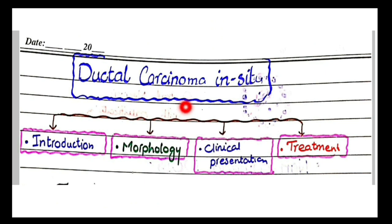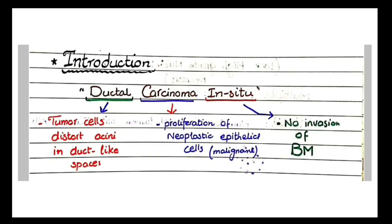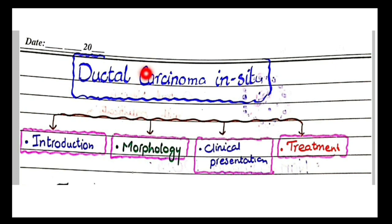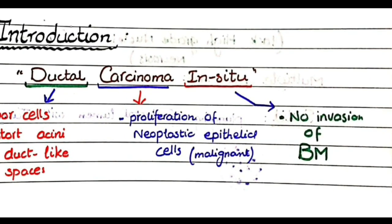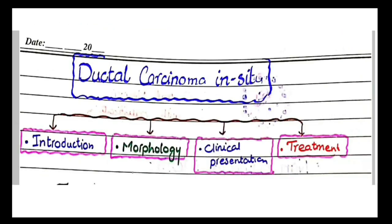Let's start with ductal carcinoma in situ. We will study the introduction, morphology, clinical presentation, and treatment. The word carcinoma means there is proliferation of neoplastic epithelial cells that are mutated and atypical. The term 'in situ' means there is no invasion of the basement membrane, so the atypical neoplastic cells do not invade the basement membrane.